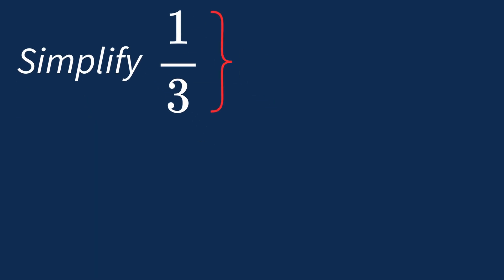To simplify the fraction 1 over 3, we can start by checking for any common factors between the top number, the numerator, and the bottom number, the denominator.